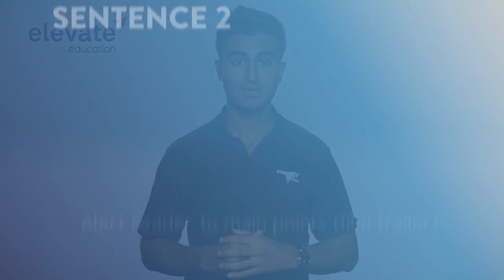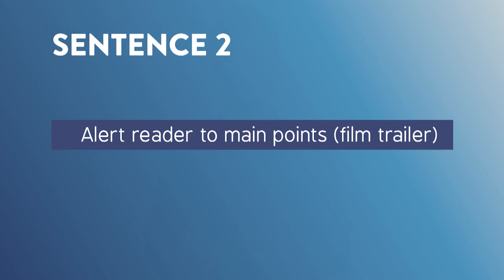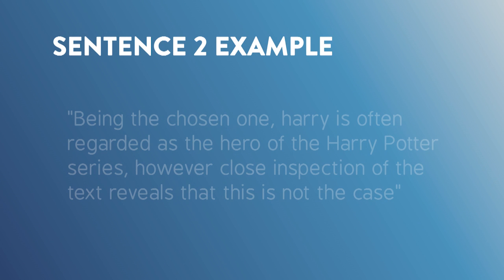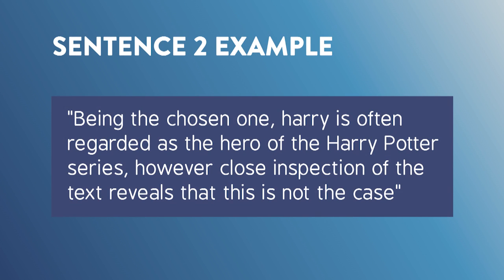Now that we have our first sentence on paper, it's time for sentence number two. In this sentence, we want to alert the reader to our main arguments, but it's got to be like a preview for a blockbuster film — we want to give them something to be interested in without giving the major plot points away. So let's take a look at my chosen sentence: 'Being the chosen one, Harry is often regarded as the hero of the Harry Potter series. However, close inspection of the text reveals that this is not the case.' I did this to explain the first sentence and clearly demonstrate that I don't think Harry is the true hero of the series — but I haven't given too much away yet.